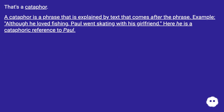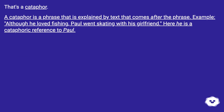That's a cataphor. A cataphor is a phrase that is explained by text that comes after the phrase. Example: 'Although he loved fishing, Paul went skating with his girlfriend.' Here, 'he' is a cataphoric reference to Paul.